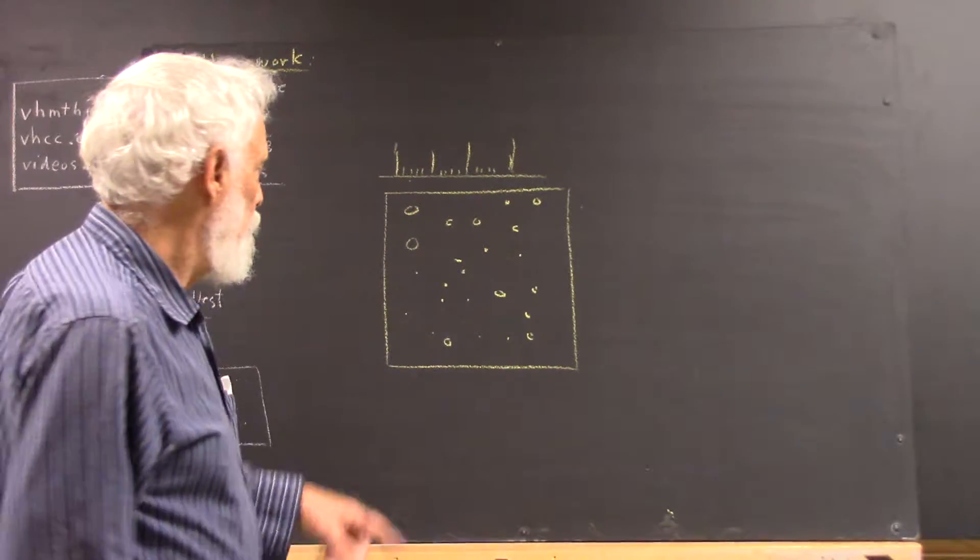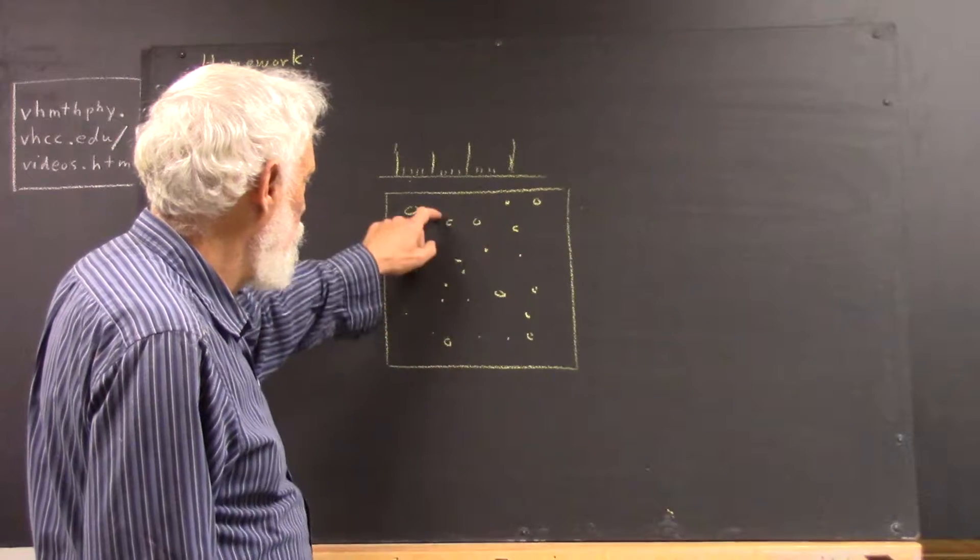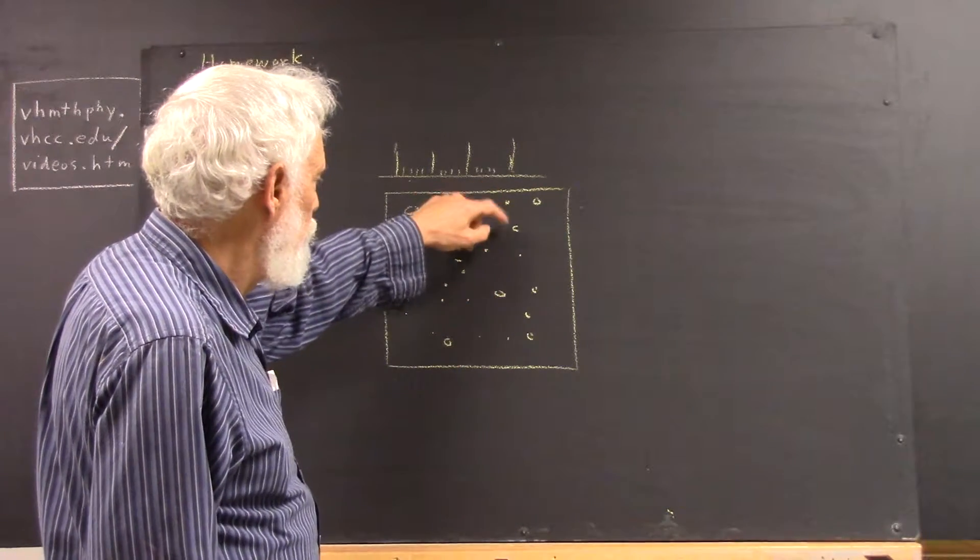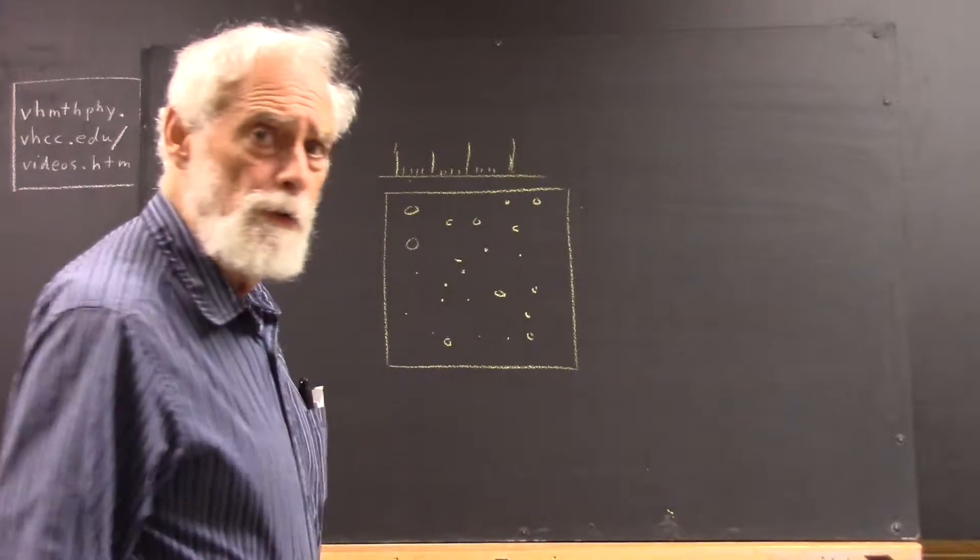Now, how many drops do we have? We've got, let's see, 1, 2, 3, 4, 5, 6, 7, 8, 9, 10, 13, 14, 15, 16, 17, 18, 19, 20, 20. I think maybe there are 23 drops.